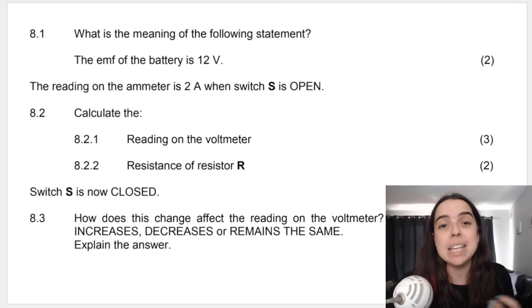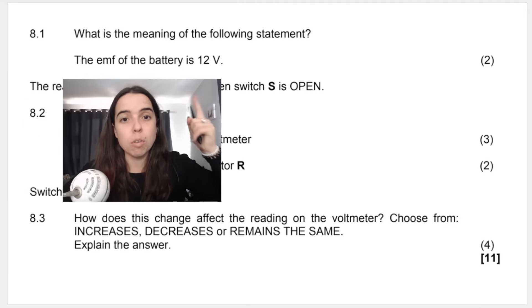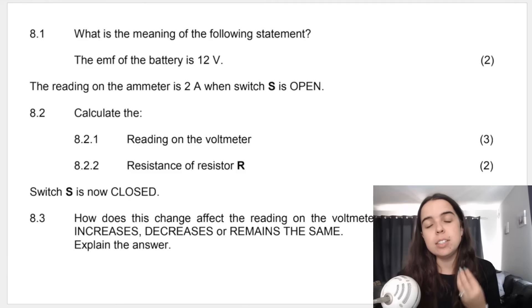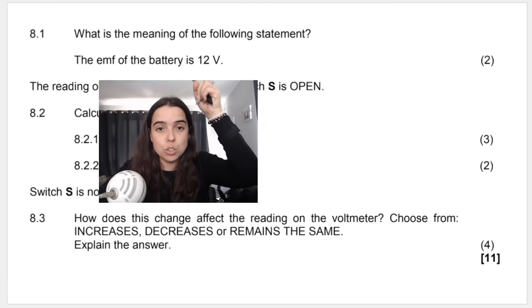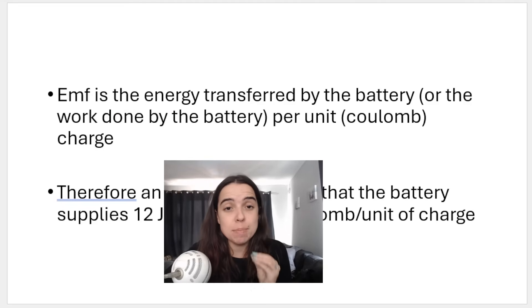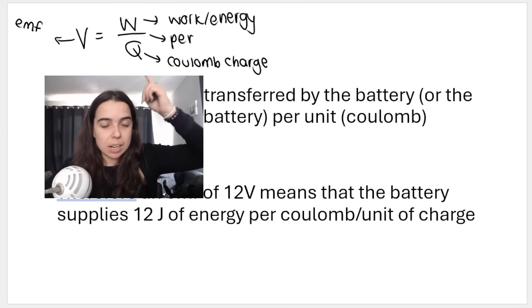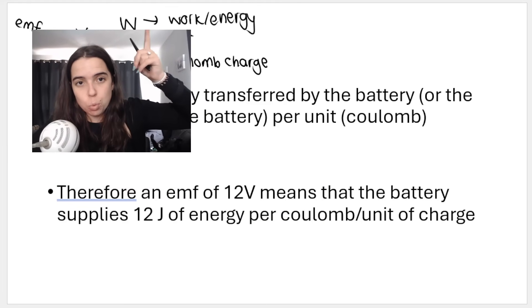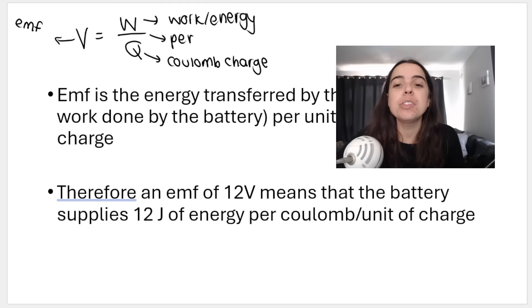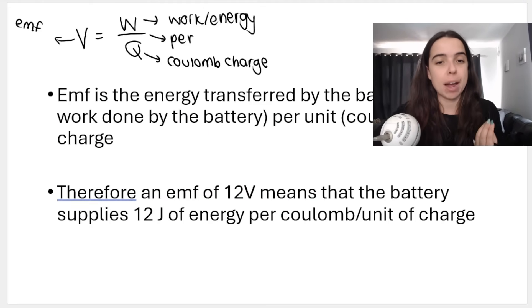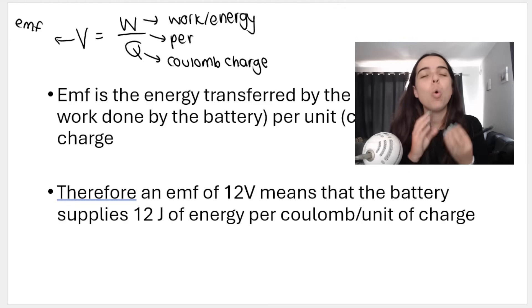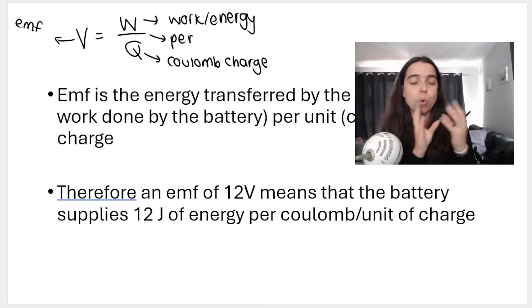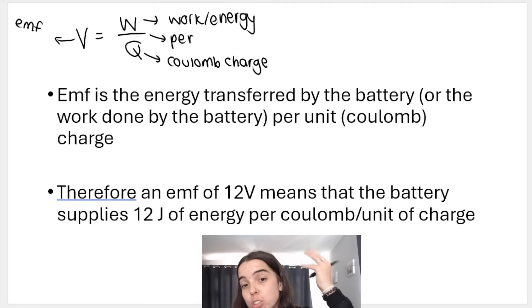8.1 asks what is the meaning of the following statement: The EMF of the battery is 12 volts. Now when they say what is the meaning, they're essentially trying to see if you understand what EMF is. So basically they want the definition of EMF in a way, but they want you to relate it to the 12 volts. First things first, you need to know that EMF, the definition is the energy transferred or the work done by the battery per unit charge or per coulomb charge. And that is basically where this formula comes from. Therefore, if I tell you that the EMF of the battery is 12 volts, it means that the battery supplies 12 joules of energy or does 12 joules of work per coulomb charge or per unit charge.